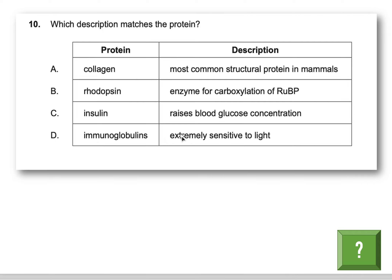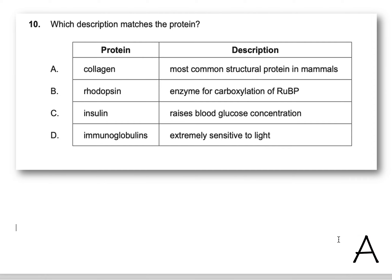Option D: immunoglobulin is involved in your immune system — it helps fight infection. They're saying it's extremely sensitive to light — no, that's not true. The one that is extremely sensitive to light is rhodopsin, which is related to sight, the ability to see. So the answer here is A. It's really important to remember something about each of these protein examples.